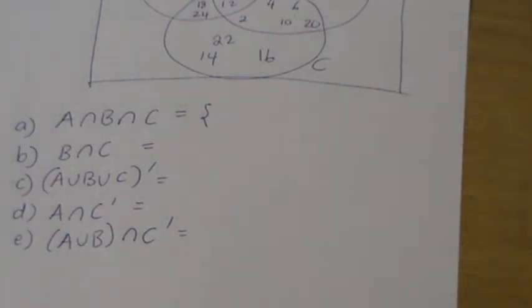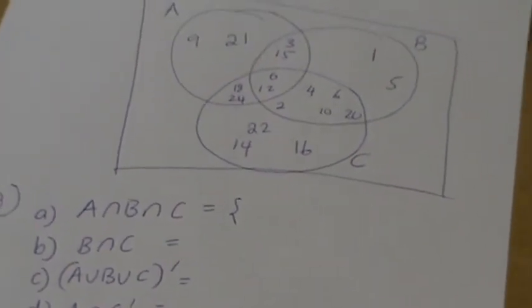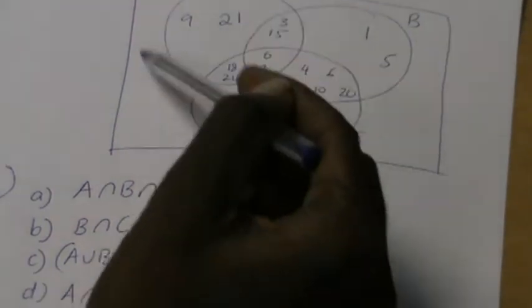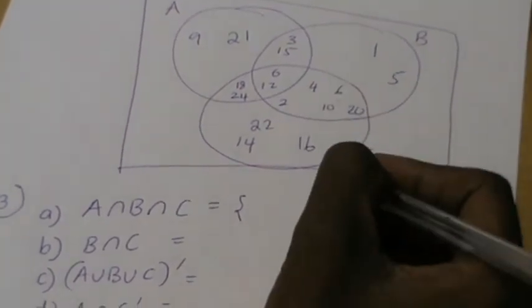6.3 should be pretty easy to do because we can always refer to our Venn diagram to answer the question. So the first one, 6.3a, A intersect B intersect C. That means we want elements inside A and also inside B and also inside C, and we can see these are the two elements.